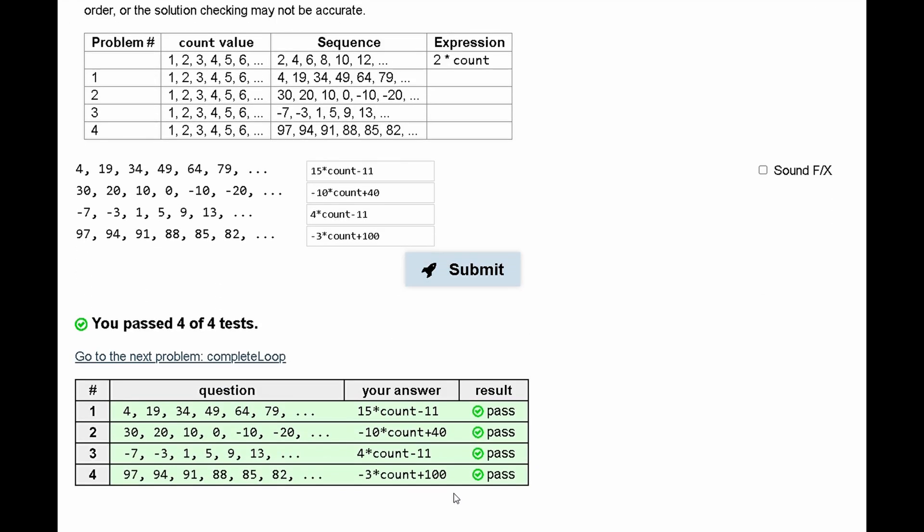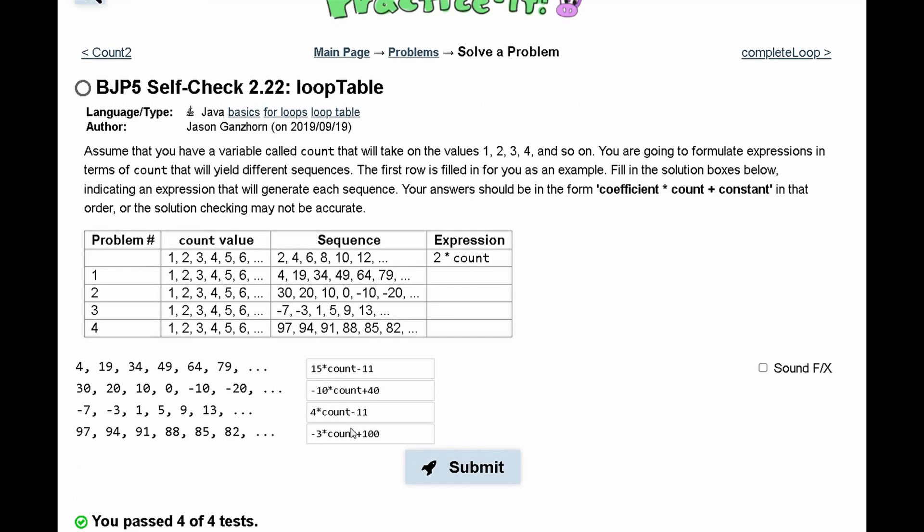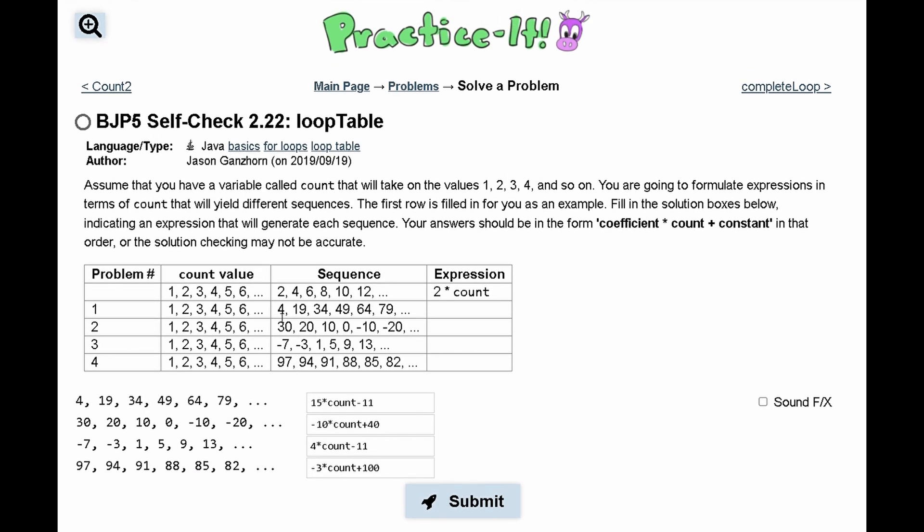If we submit this, we have passed all of the tests. Again, what we were doing is basically looking at the sequence and finding the slope, which is y2 minus y1 over x2 minus x1. Here, we have our y2 being 19 minus 4, that's going to be 15, over 2 minus 1. So that will give us the correct answer.